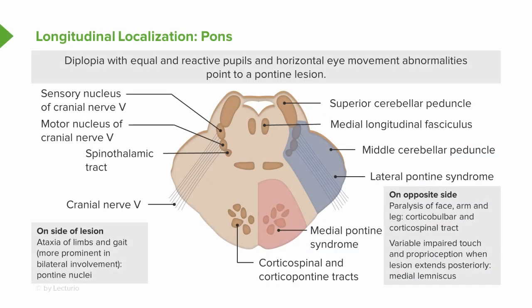When we think about large pontine strokes, the crossed findings are: on the side of the lesion, we see ataxia of the limbs and gait abnormality as a result of loss of cerebellar fibers and the pontine nuclei. Opposite the side of the lesion, we can see paralysis of the face, arm, and leg as a result of impairment of the corticobulbar and corticospinal tract, and variable impairment of touch and proprioception from medial lemniscus involvement. That crossed finding is important for localizing to a pontine stroke.